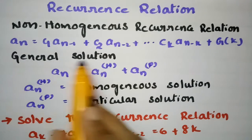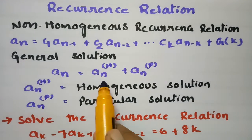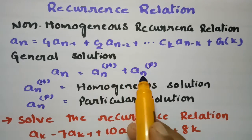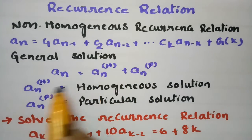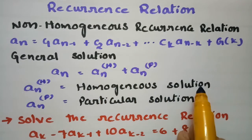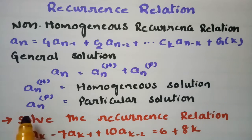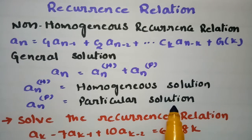For finding the general solution, An = An(H) + An(P), where An(H) is the homogeneous solution and An(P) is the particular solution.